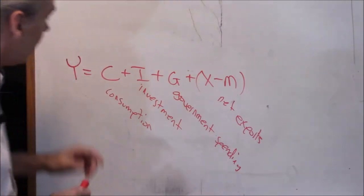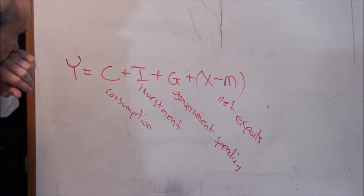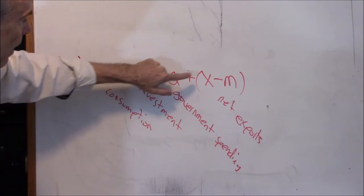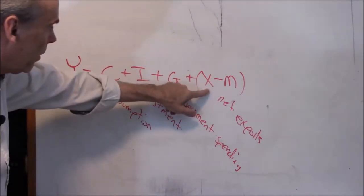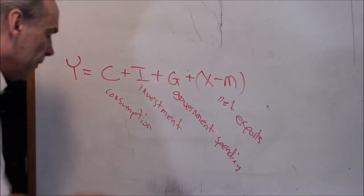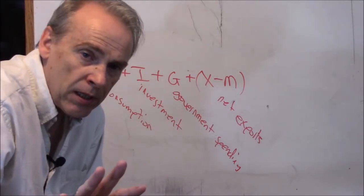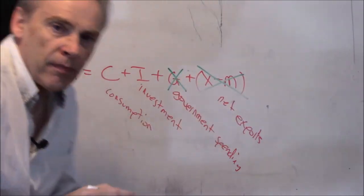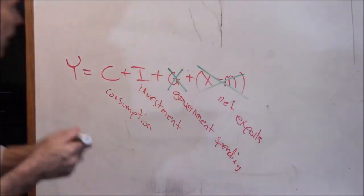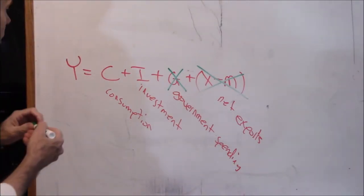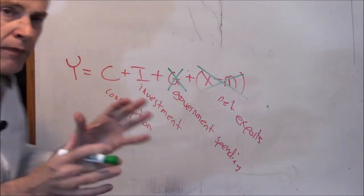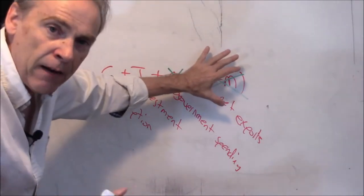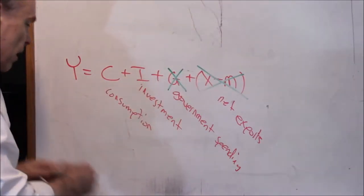Government includes both federal and state and local. Net exports is what we sell to people in other countries minus what we bought from them. We're going to keep it simple with this analysis — we're going to get rid of the government and get rid of foreigners. Every Texan's dream come true. So we're going to deal with just a pure private sector economy: just C plus I.